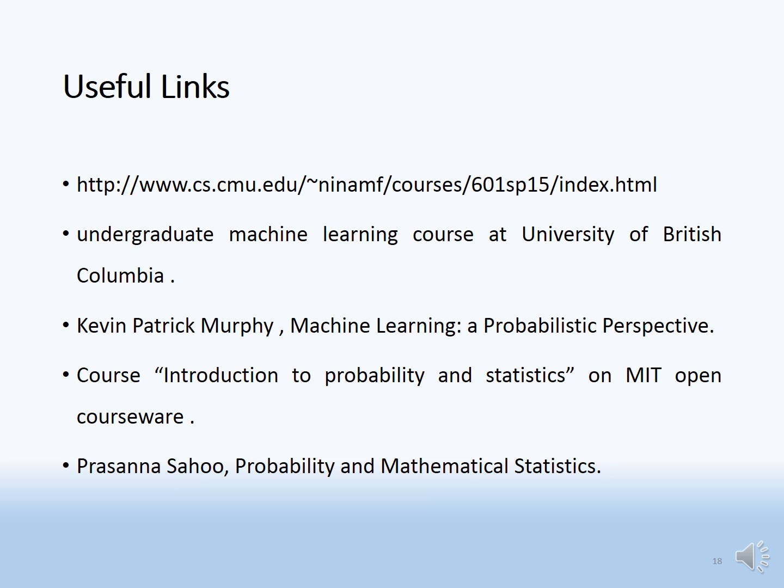Useful links: the first three are on machine learning — a course by Tom Mitchell, a course by Nardo at the University of British Columbia, and a book by Kevin Murphy titled 'Machine Learning: A Probabilistic Perspective'. The last two are on probability: a course on probability and statistics from MIT, and a book on probability by Pasanna Sahu.